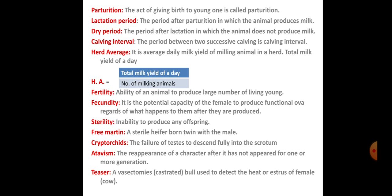Freemartinism is a sterile heifer born as a twin with a male — when sterile male and female twins occur, the female is called a freemartin. Cryptorchidism is a disease condition where there is failure of the testis to descend fully into the scrotum — it is called cryptorchidism. Atavism is the reappearance of a character after it has not appeared for one or more generations — it is called atavism. A teaser is a vasectomized or castrated bull used to detect females in heat — it is called a teaser bull.